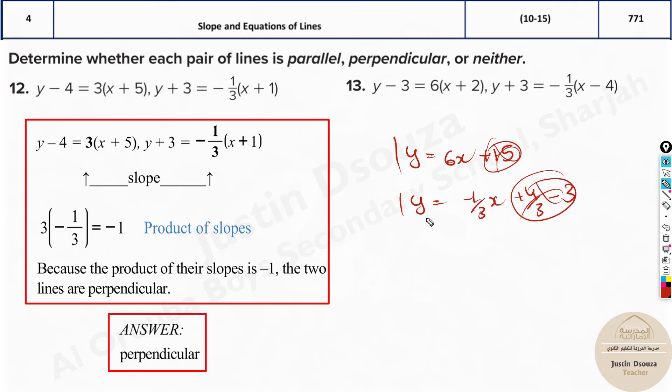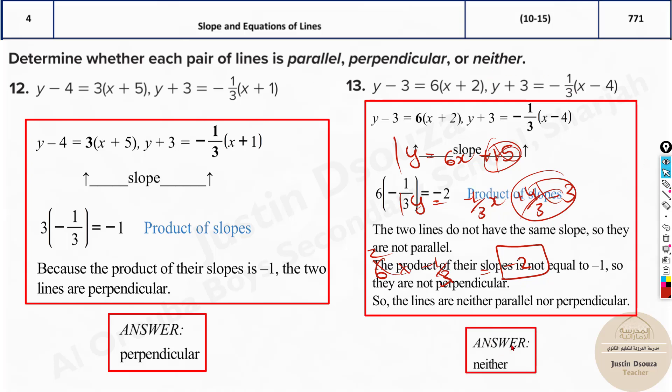As long as it's y equals, we just look at the slopes: 6 times negative one-third. What's the answer? It's negative 2. Now, this is a problem. It's not negative 1, so not perpendicular. It's not equal, so not parallel. It's neither parallel nor perpendicular. The answer is neither. This is how we solve those problems.